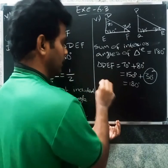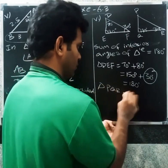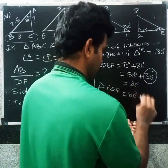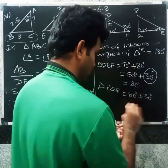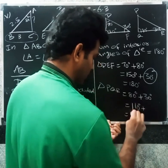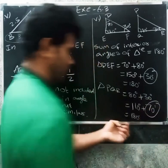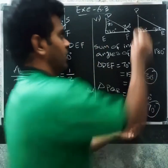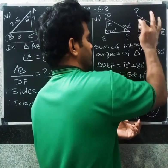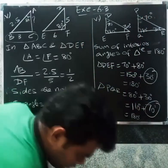For triangle PQR: 80 degrees plus 30 degrees equals 110 degrees, so the third angle is 180 minus 110 equals 70 degrees. Now applying the angle condition.